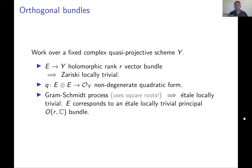By the usual Gram-Schmidt process you can find an orthonormal basis of sections locally, but because it uses square roots you can only do it locally analytically or étale-locally. So orthogonal bundles' orthogonal structure is not Zariski locally trivial in general; they correspond to étale-locally trivial principal O(r,ℂ) bundles, where O(r,ℂ) is the complex matrices preserving the standard quadratic form on ℂʳ.